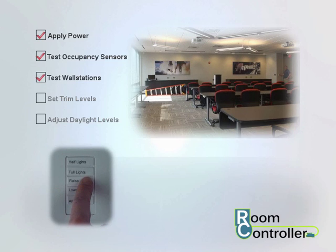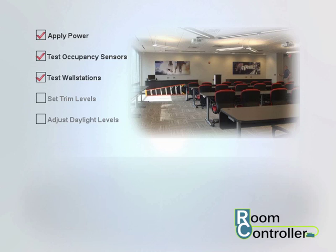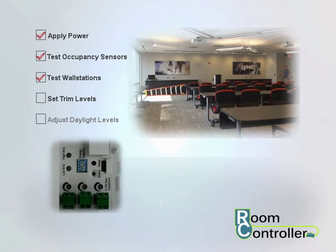Once wall station operation has been verified, if you are using 0 to 10 volt dimmable loads, set the appropriate trim level for best operation and efficiency. Trim levels have been preset to approximately 90% maximum. Additional energy savings can be gained by adjusting this further if electric light contributed is over the target illuminance for the space.